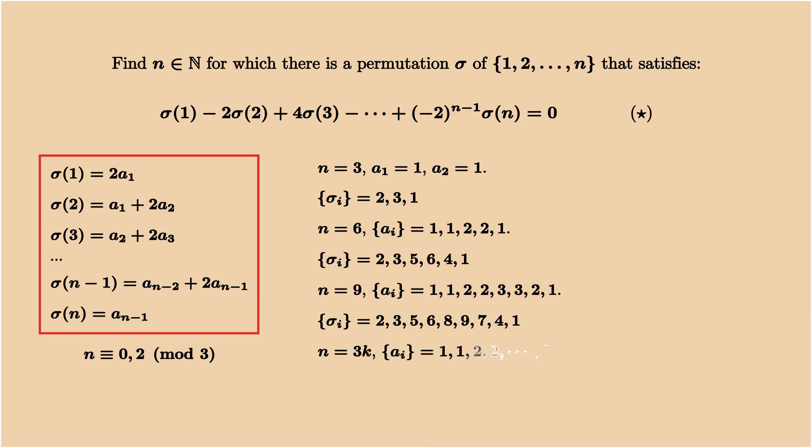I'm sure that you can see the patterns. So when n is 3k, we take the sequence 1, 1, 2, 2 until k, k, and then from k, k minus 1, k minus 2, back to 1. And it is just a simple induction to show that this always works.